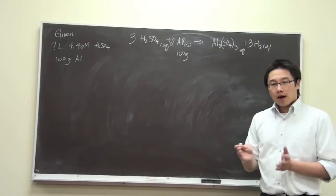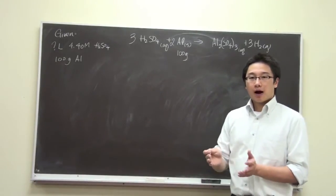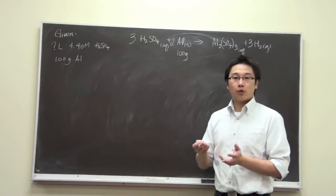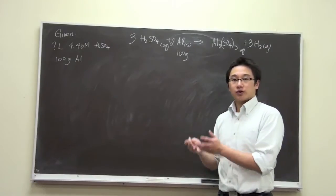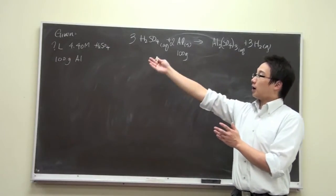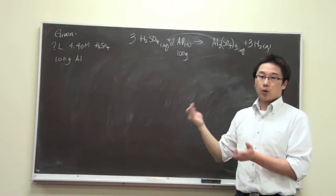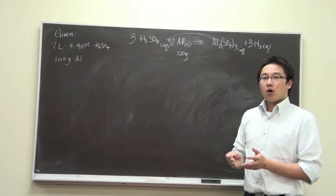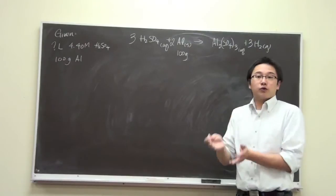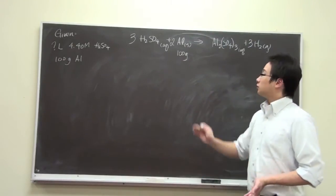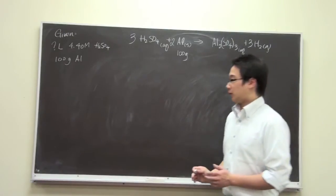Remember, stoichiometry is about using the balanced equation. From the balanced equation, we use mole ratio to find out the amount of the other compounds or products. In order to use mole ratio, we have to find out the moles of the given first. So let's find out the moles of aluminum.